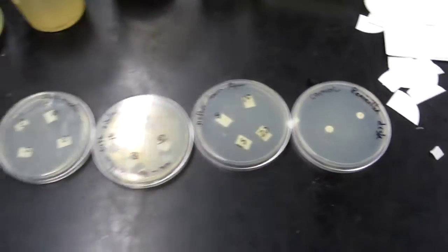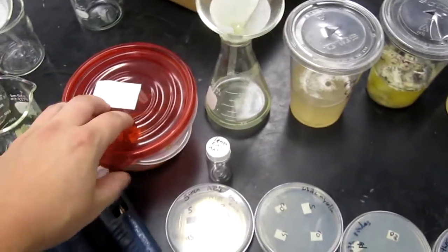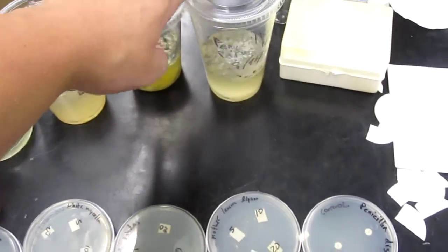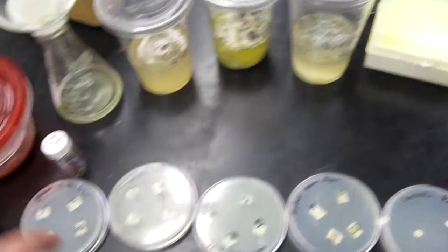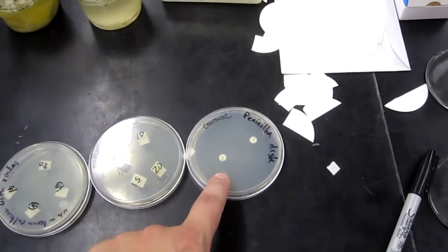The ultimate goal was to prove that you could isolate a penicillin strand from a lemon, liquid culture it, and then penicillin, the secondary metabolite, would be produced in the liquid broth and would show some form of inhibition against a gram-positive bacteria.